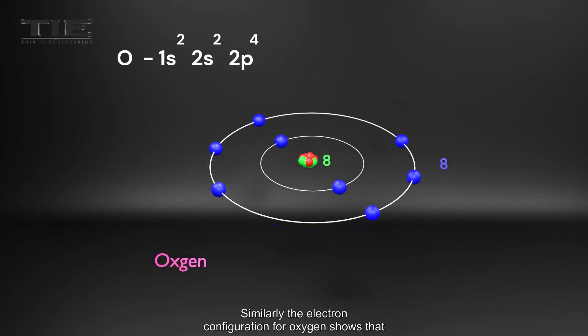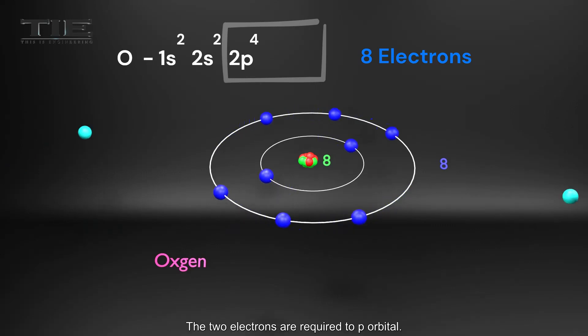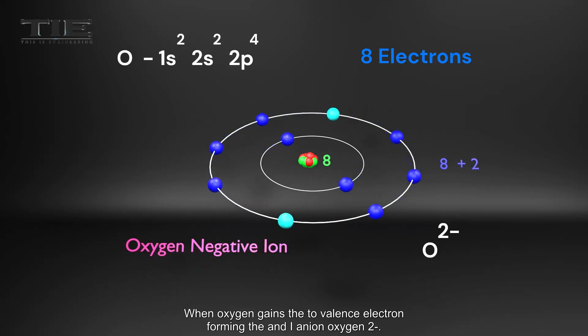Similarly, the electron configuration for oxygen shows that there are totally 8 electrons, and it needs 2 valence electrons to complete its second energy level. The two electrons are required in p orbital. So it can gain 2 electrons. When oxygen gains the 2 valence electrons, forming the anion oxygen 2 minus.